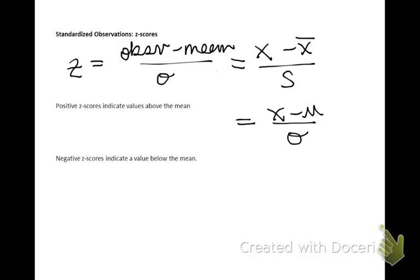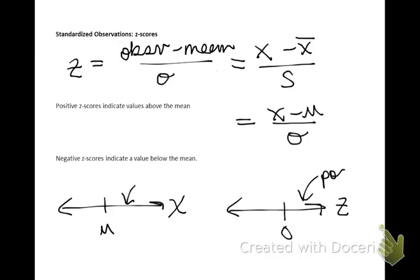Positive z-scores indicate that a value fell above the mean, and negative z-scores indicate that a value fell below the mean. For example, if this is your x-distribution and this is the mean of x, a value that falls above the mean would have a positive z-score, and a value that falls below the mean would have a negative z-score. The z-score basically indicates how far above or below the mean an observation is.